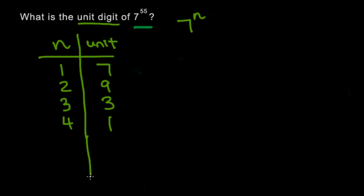And let's just do a couple more values. 5 is going to be 7 to the power of 5, it's just 1 times 7, which is 7. And just one more, it's going to be 7 times 7, which ends in 9.